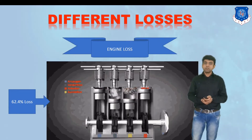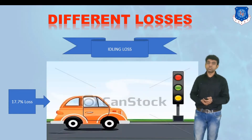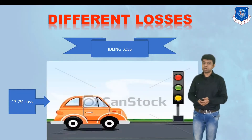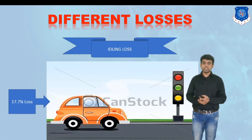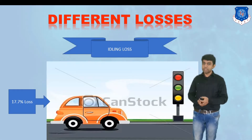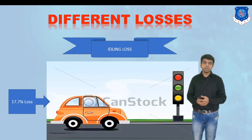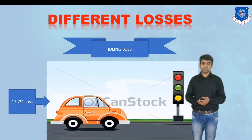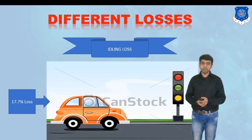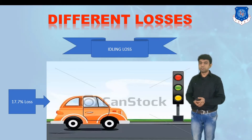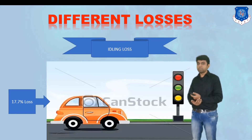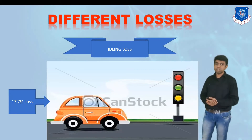The second loss is the idling loss — when the vehicle is stationary at a signal — which accounts for about 17.7%. To reduce this, we need to think about proper infrastructure and not rely solely on the vehicle itself.